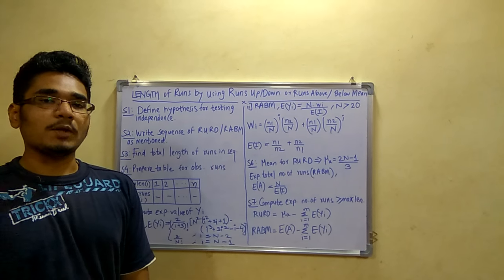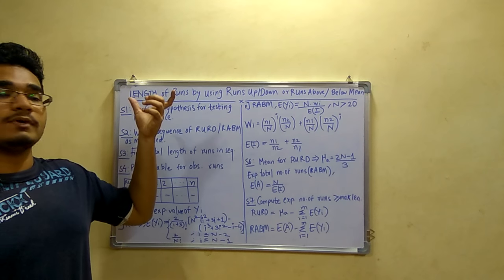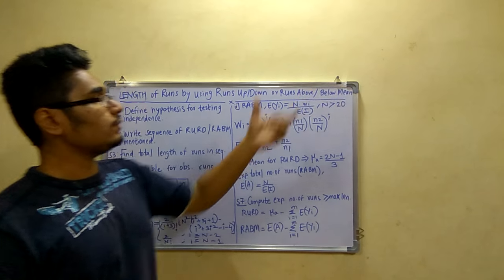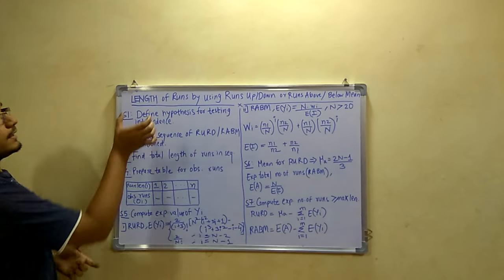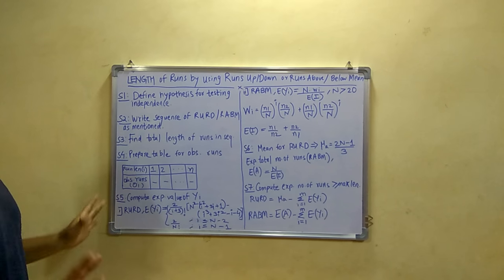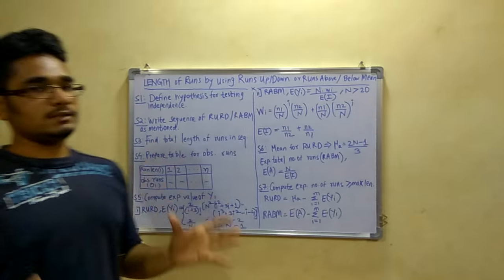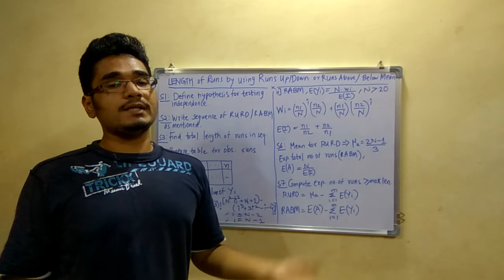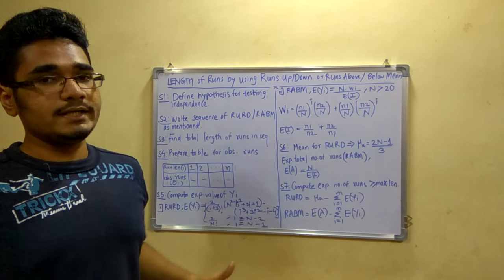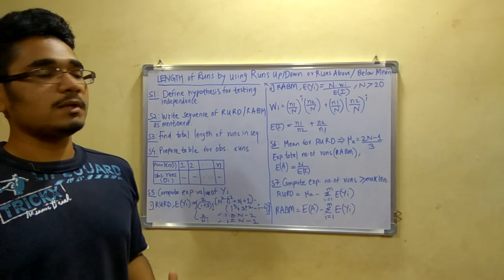Today I will discuss the topic of length of runs by using runs up and down or runs above or below the mean. Now here I have stressed the word length - it is not similar to the runs up or runs down which you have seen in previous videos or runs above or below. This is totally different, it is a bit complex problem. As you can see, the algorithm is very big.